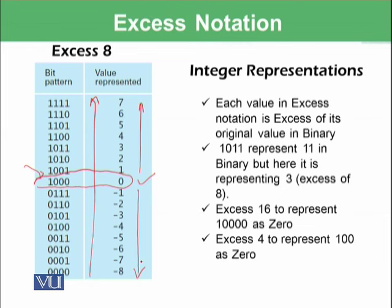If we are using excess 8 notation, this is called excess 8 notation because it is representing the binary 8 to represent 0. You already know that this is 0 in binary 1, 2, 3, 4, 5, 6, 7 and 8. So in excess 8, you are representing 1000 which is equivalent to 8 to represent 0.